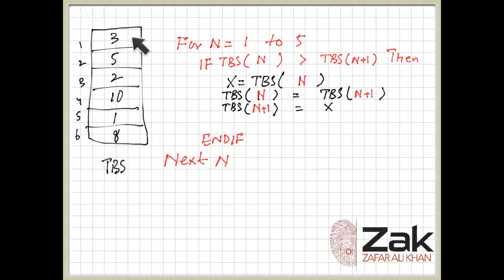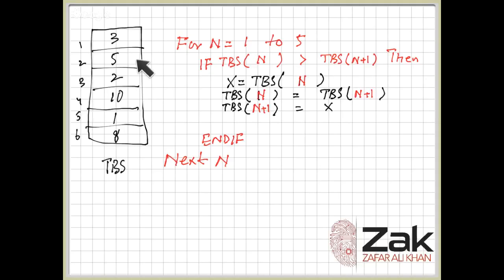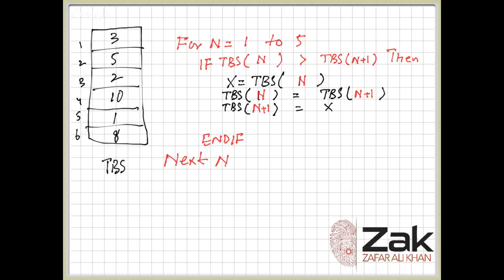This will be completed from position 1 to position 5. When n is 1, toBeSorted[1] is not greater than toBeSorted[2], which is 5, so no swap. When n becomes 2, toBeSorted[2] is 5 and toBeSorted[3] is 3 — 5 is greater than 3, so that is true. This 5 and 3 will be swapped: position 2 becomes 3 and position 3 becomes 5.